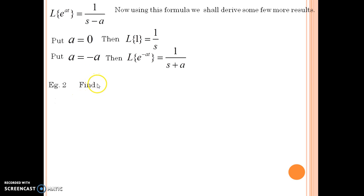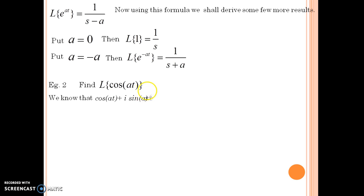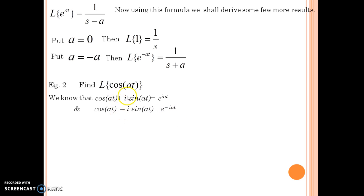Now I am moving forward towards finding the Laplace of a trigonometric function. I am choosing to find the Laplace of cosine at. From complex numbers, we are already aware that cosine at plus i sin at equals e to the power i at, and also that cosine at minus i sin at equals e to the power minus i at. Solving these two equations simultaneously, we obtain cosine at equals e to the power i at plus e to the power minus i at, divided by 2.